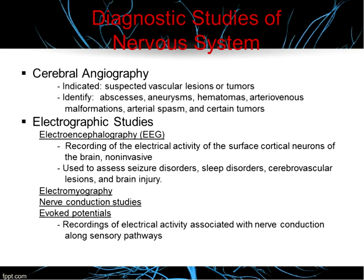Nerve conduction involves applying an electrical stimulus to the distal portion of a sensory or mixed nerve and recording the resulting depolarization wave. The time between initiating the stimulus and the depolarization wave at the recording electrode is called the nerve conduction velocity. Evoked potentials involve electrodes placed on specific parts of the skin and scalp to record electrical activity along sensory pathways. These can evaluate the visual or auditory system, assess for consciousness, and examine conditions like optic neuritis, multiple sclerosis, and acoustic neuroma.